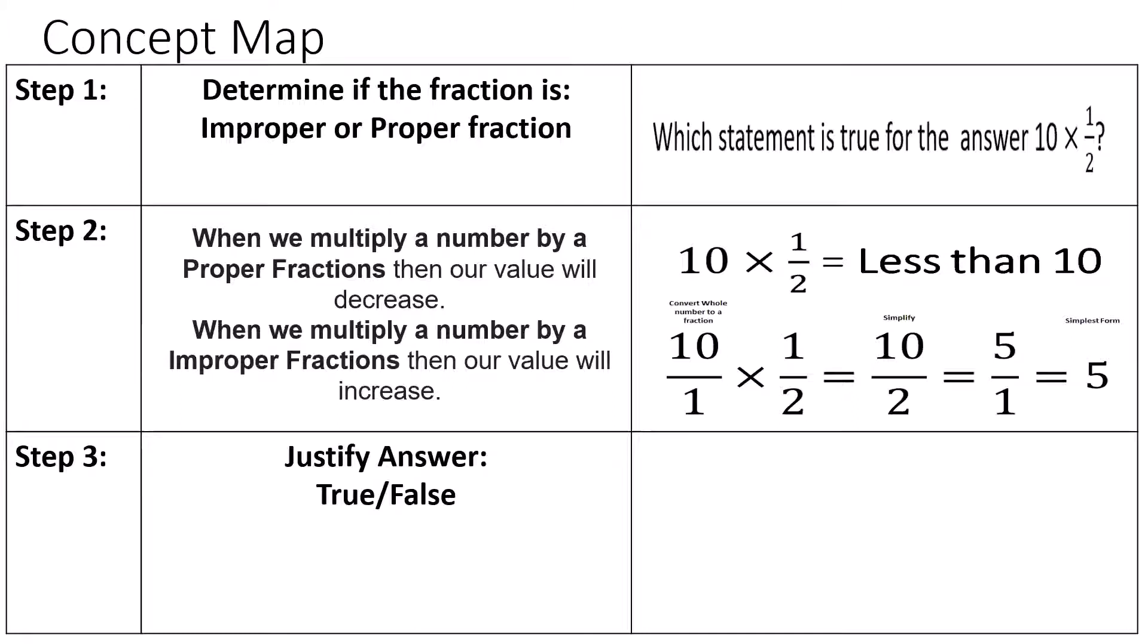Now how do we multiply fractions like this? First we'll convert the whole number to a fraction by putting a one in the denominator and leaving 10 in the numerator. Then we will cross multiply one half. So 10 times one gives us 10. 1 times 2 gives us 2.